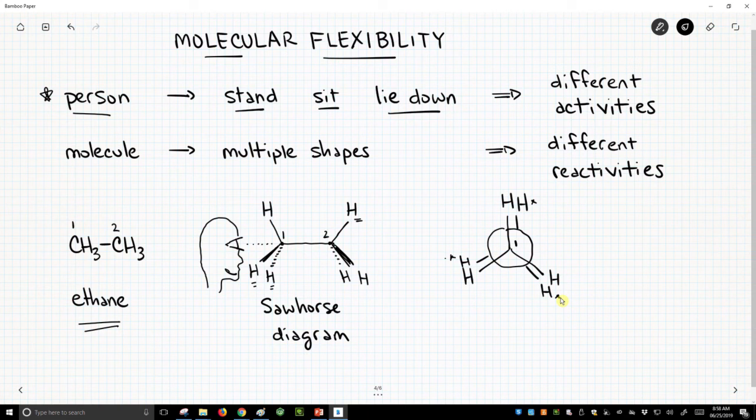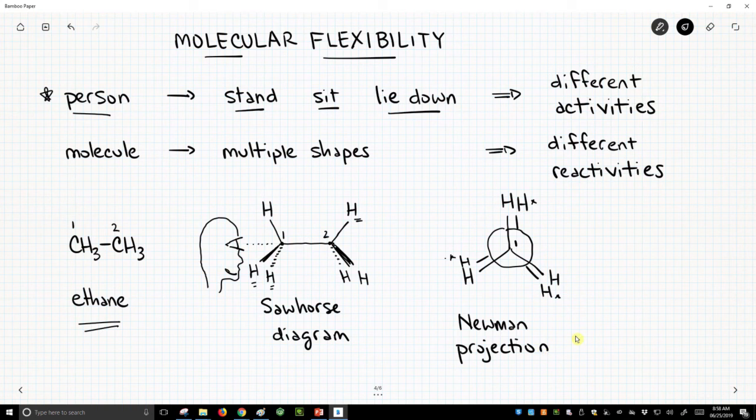This representation is called a Newman projection. And Newman projections are a really common way to represent molecular flexibility and conformational analysis. And we will rely on them quite a bit throughout this particular playlist. So we've learned about the importance of flexibility and two ways to represent different conformations through a sawhorse diagram and through a Newman projection.